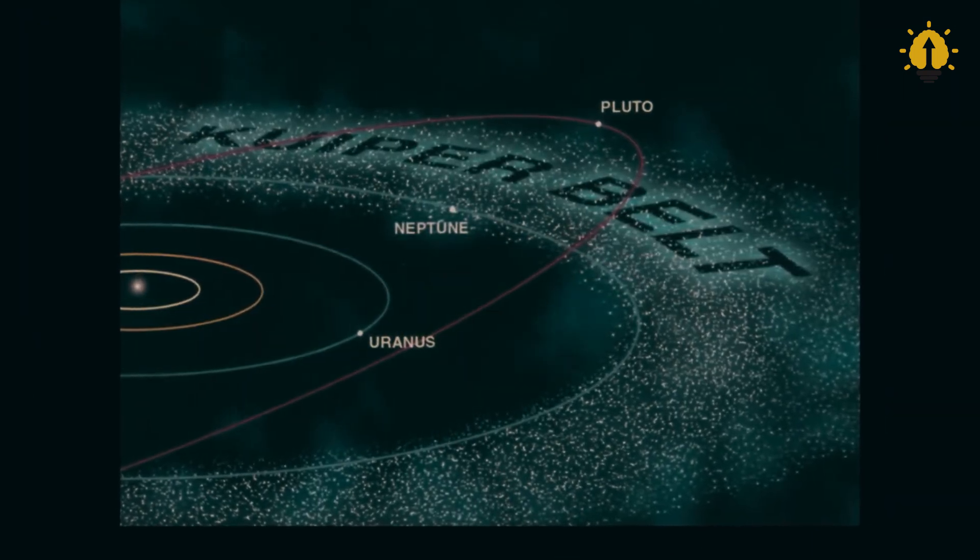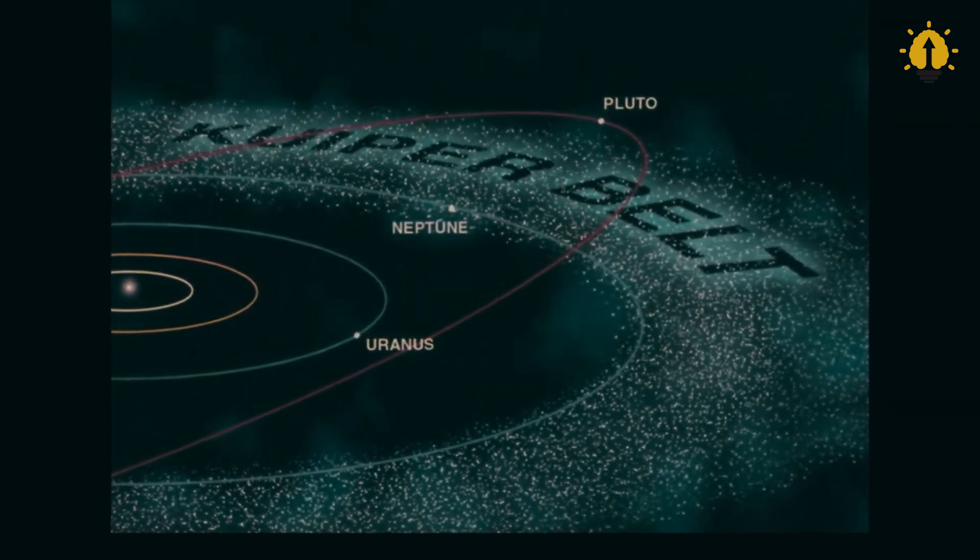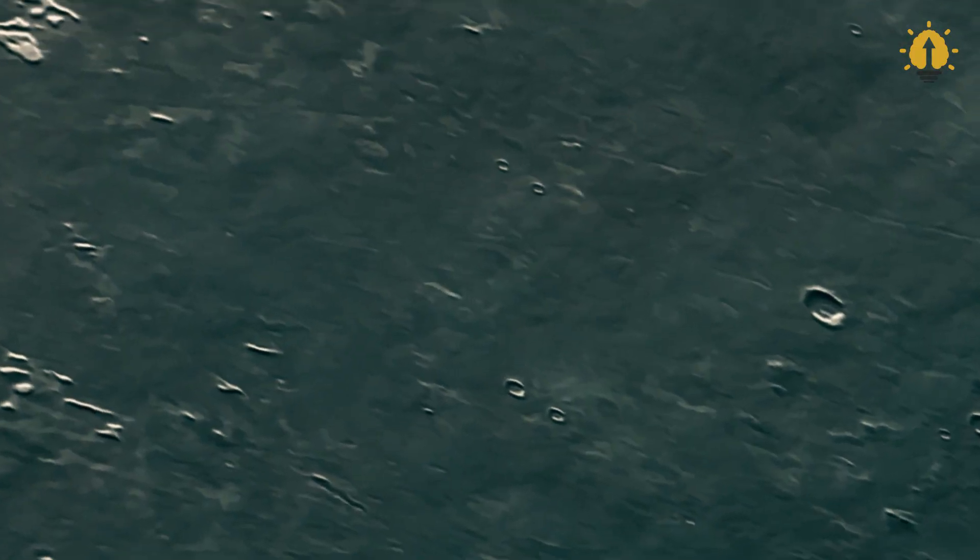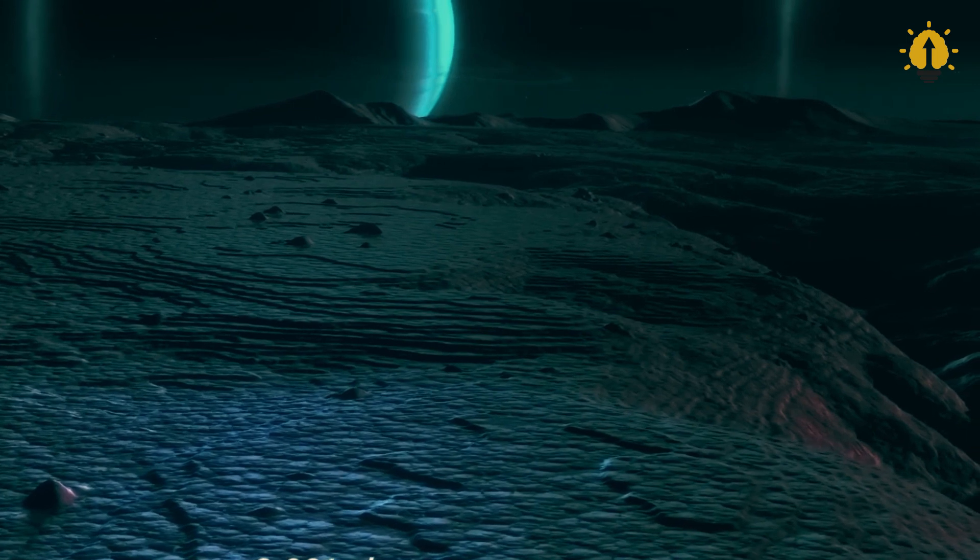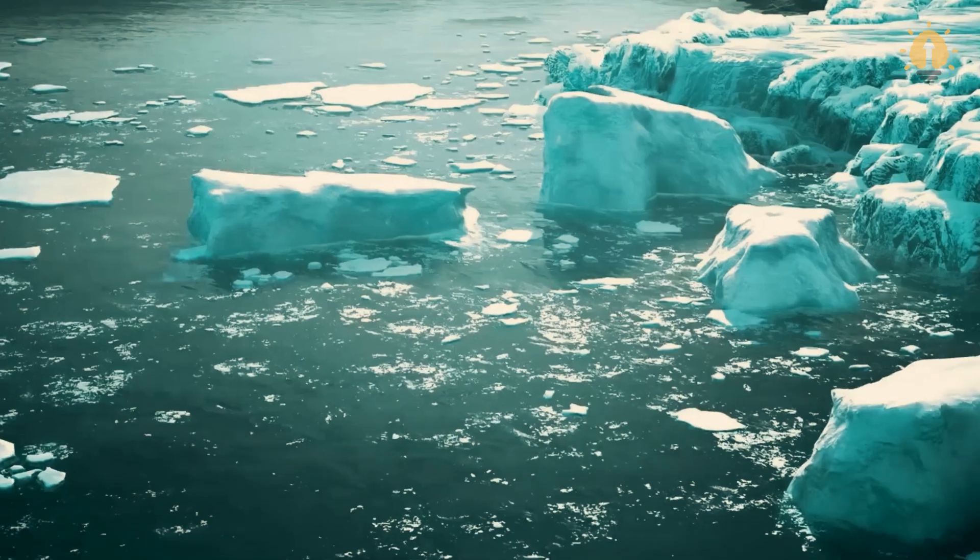During its flyby of Neptune, Voyager 2 captured stunning images of the planet, its rings, and its moons. They discovered features like the Great Dark Spot, a vortex similar to Jupiter's Great Red Spot.